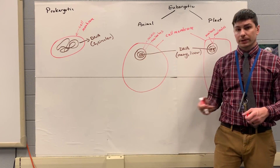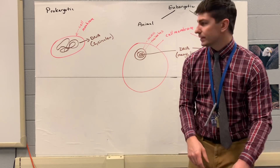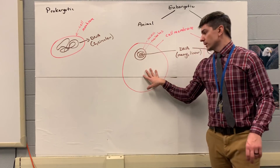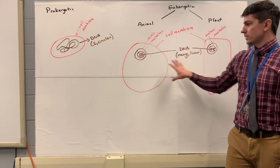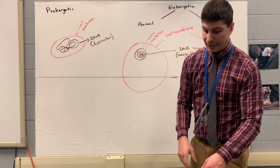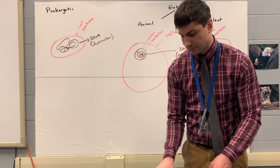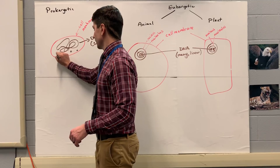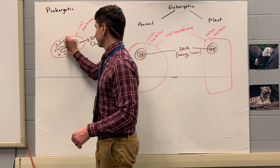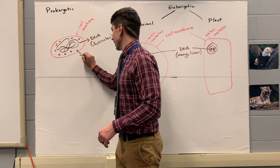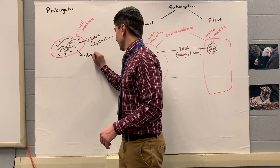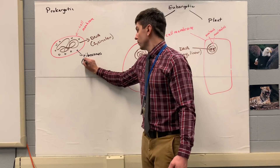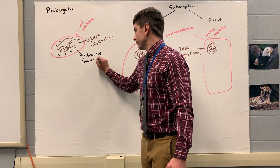They're all going to have cell membranes and they're all going to have DNA. In each one of them, we're going to have a jelly-like material called cytoplasm — that's going to be in all three. And then lastly, each one of them is going to have ribosomes scattered throughout the cell. Their main function is to make proteins.